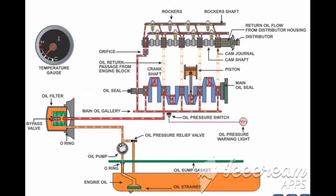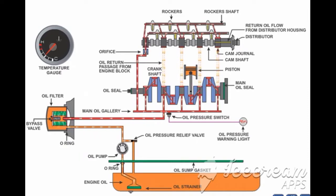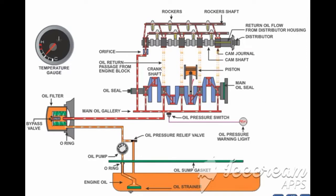From the crankshaft journals, the oil is supplied to the big end bearings through small passages built into the crankshaft. The big end bearings have small openings through which the pressurized oil is splashed intermittently towards the piston gudgeon pin and cylinder walls.